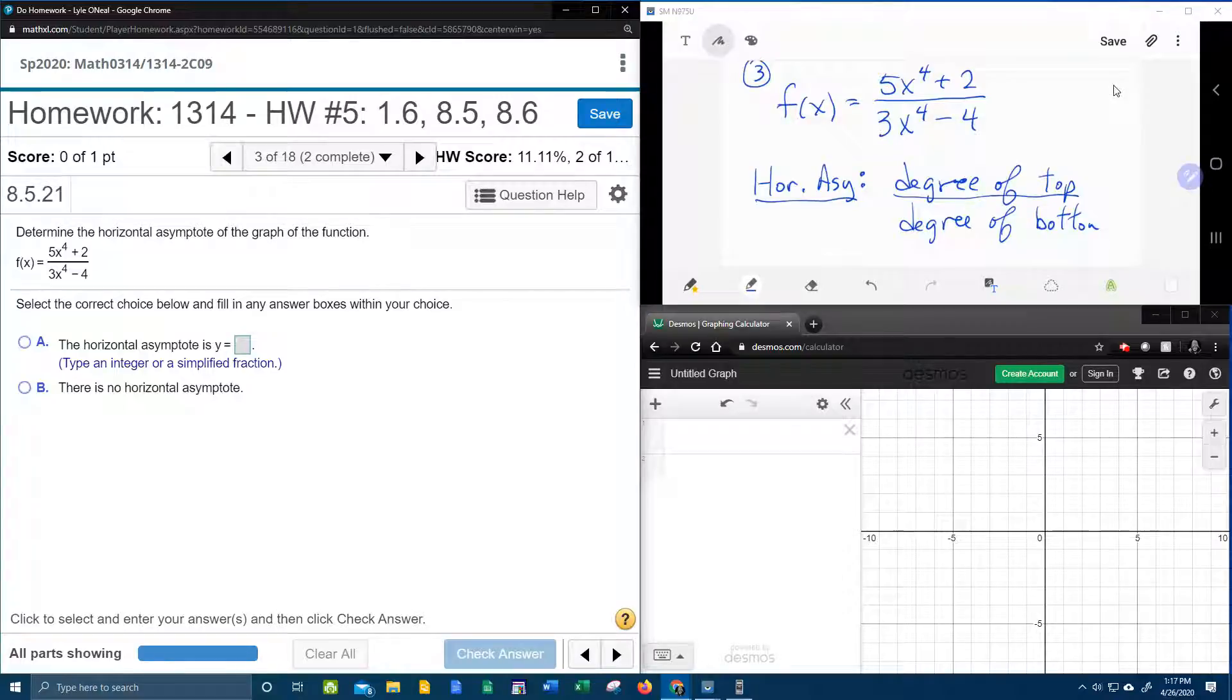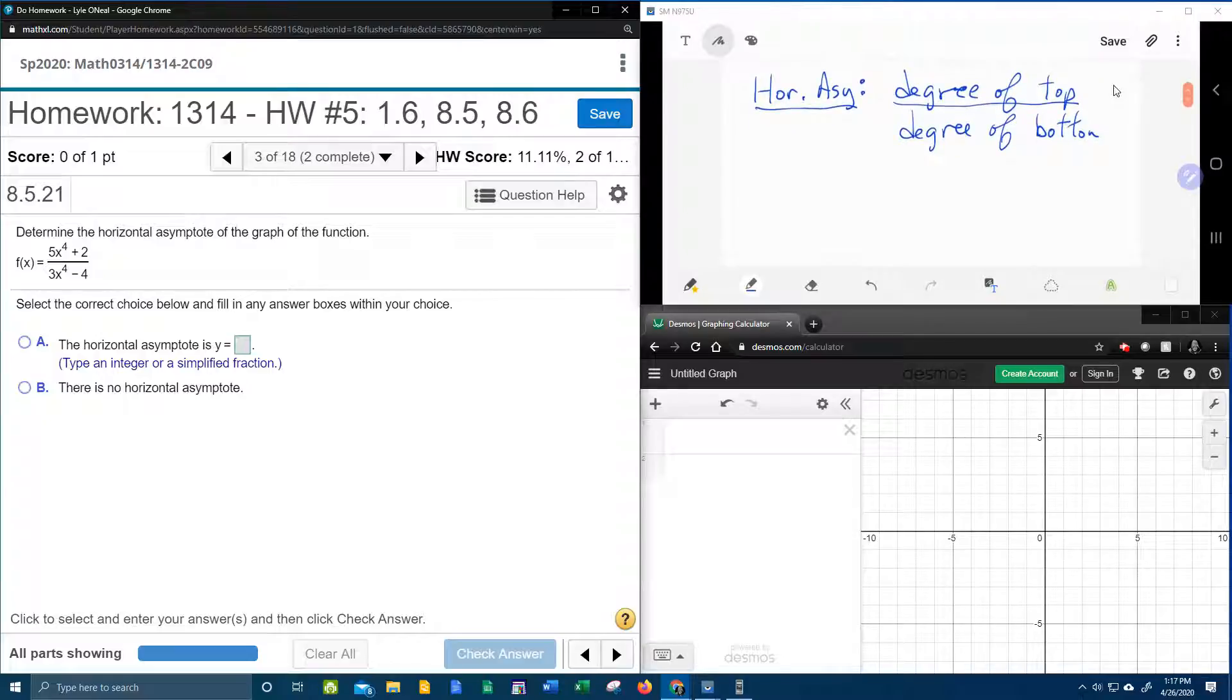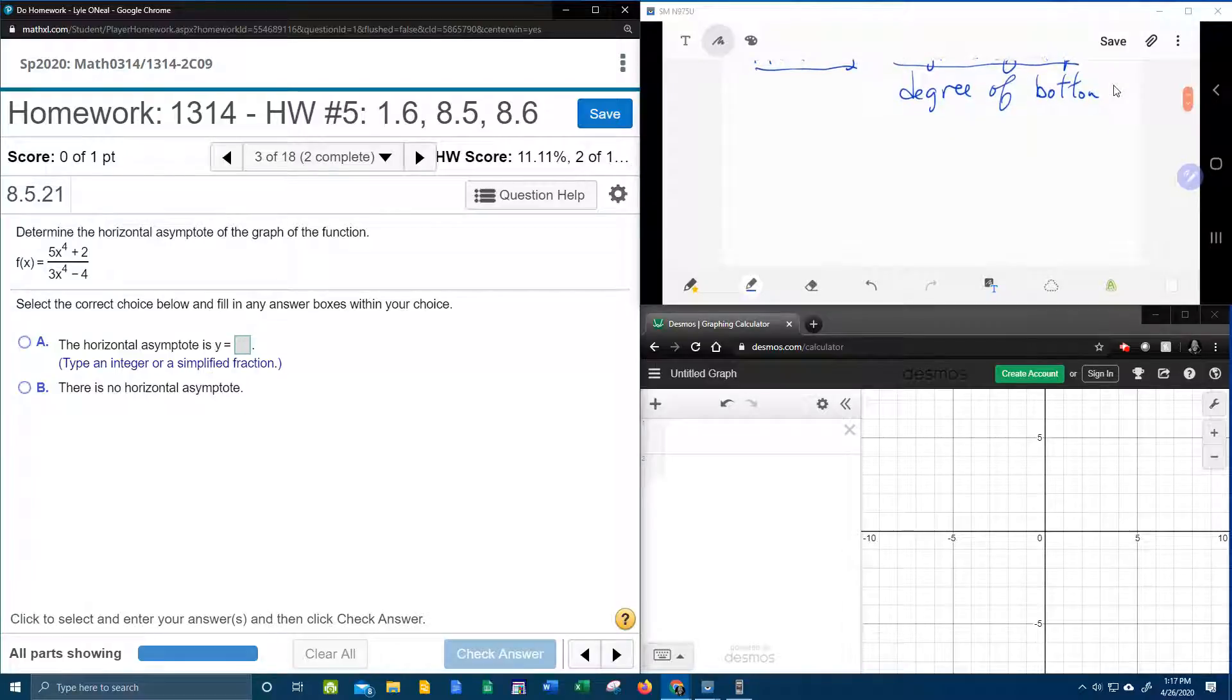So we can see the degree of the top is four, and the degree of the bottom is four, and those are equal. But what I'm going to do is give you all three scenarios so that if yours is different, you'll know how to solve this problem. Okay, so scenario number one,